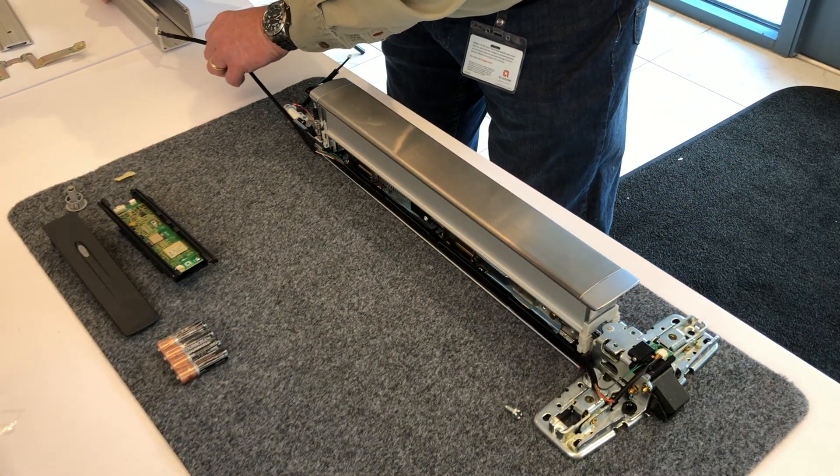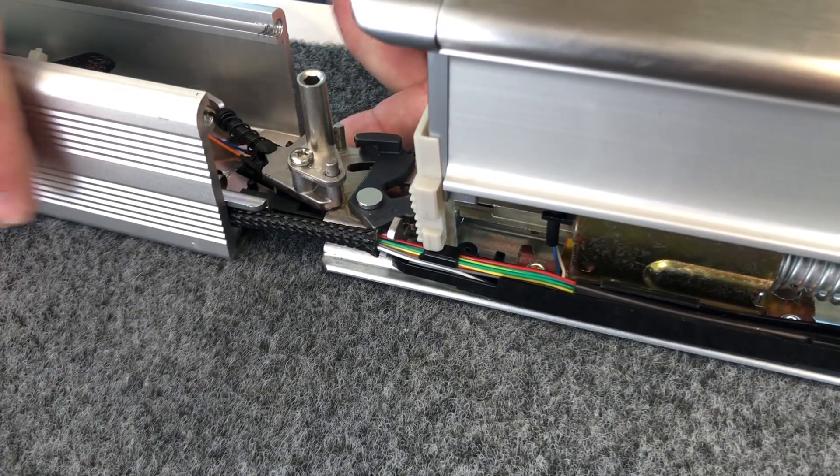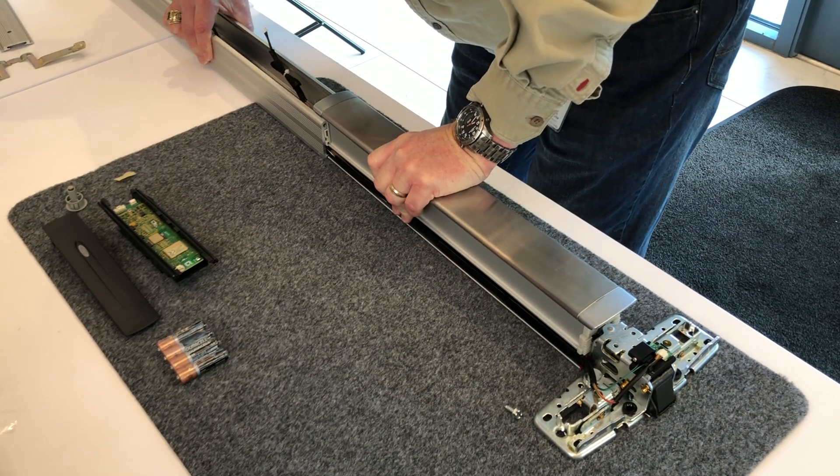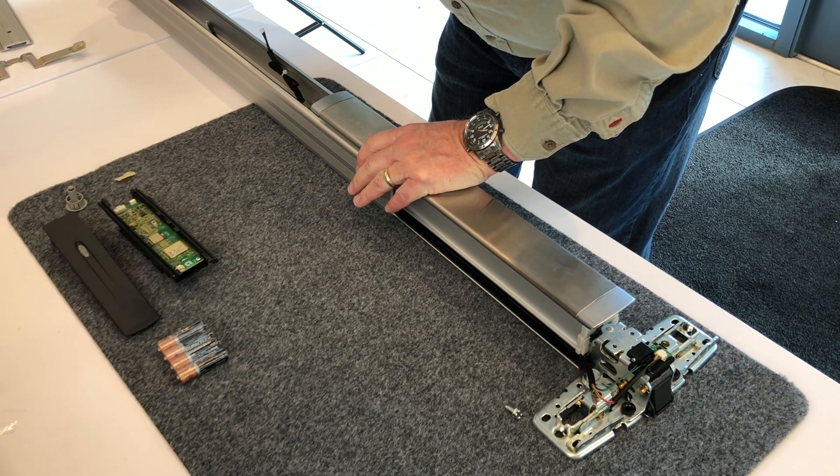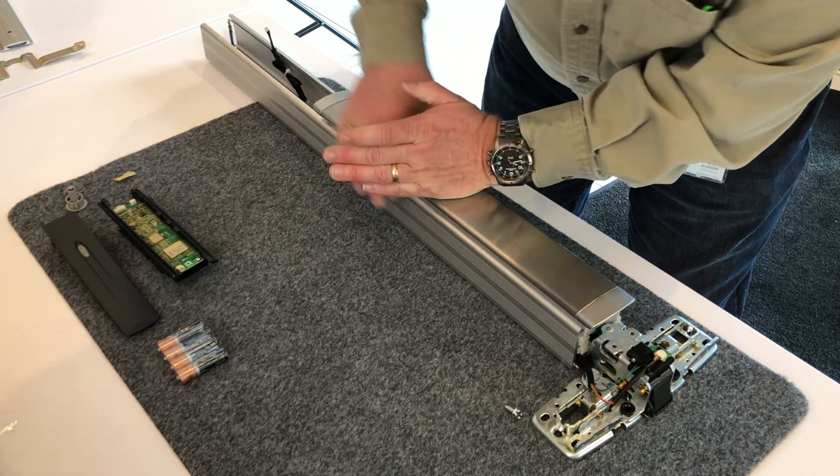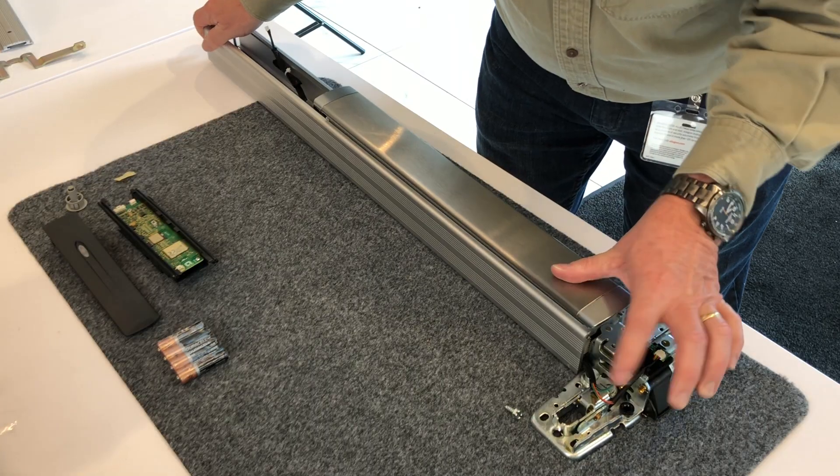Then, gently guide the undogging module into the grooves of the mechanism case. Hold the push pad all the way down to align the push pad guides and slowly slide the mechanism case into place. Use caution to ensure the push pad guides are in place as shown and that no wires are pinched.